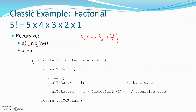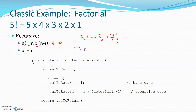We need a stopping point. In terms of the definition of the problem, if the recursive case is n times (n-1) factorial, we need a base case to stop. That's what 0 factorial provides — the base case. Zero factorial returns 1, which means 1 factorial can be defined as 1 times 0 factorial, so 1 factorial is 1 times 0 factorial, and 0 factorial is 1.